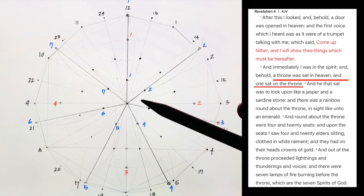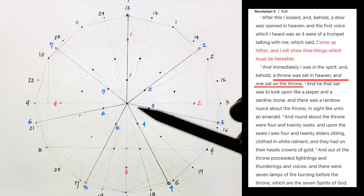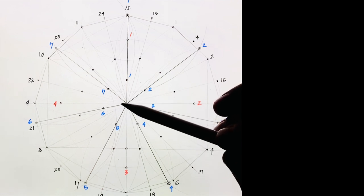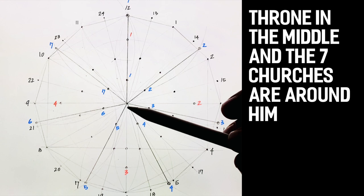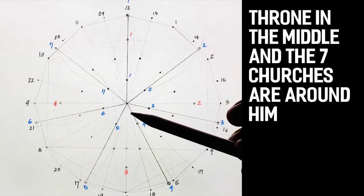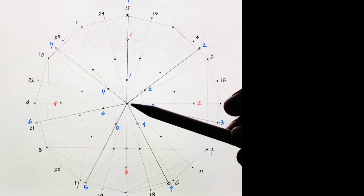And immediately I was in the Spirit, and behold, a throne was set in heaven, and one sat on the throne. This is what we talked about. Right here is where the Lord is. Yah and Yeshua in the middle.